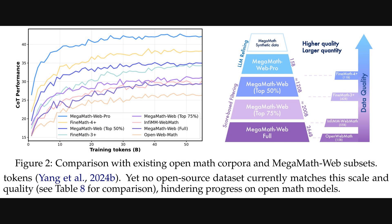Building on that dataset overview, figure two dives a bit deeper into how MegaMath stacks up against other existing OpenMath datasets. On the left you see a performance graph — specifically Chain of Thought Performance — plotted against the number of training tokens used. It compares different MegaMath subsets, like Web Pro and the top 50%, against datasets like FineMath and InfimWebMath. On the right, there's a pyramid-like diagram showing the different layers of MegaMath Web, from the full setup to the refined Web Pro, visually comparing their size and quality against those other datasets. It really emphasizes how they tried to push both quantity and quality.